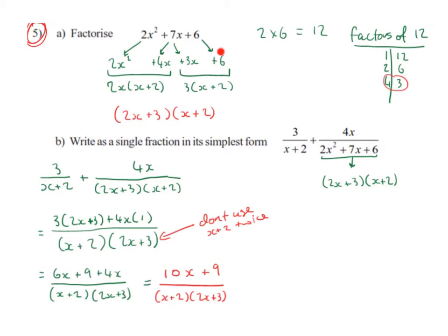Then we take the two terms on the right-hand side and we factorize those. We have a look and see what will divide into 3x and also into 6, and our highest common factor is 3. 3 into 3x leaves us with x, 3 into 6 goes twice.